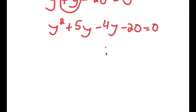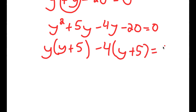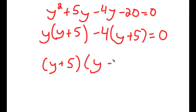I can rewrite y as 5y minus 4y, and the reason I did this is so I can factor by grouping. For y squared plus 5y, I'm going to factor out y, giving me y times y plus 5. And from negative 4y minus 20, I'm going to factor out negative 4, giving me negative 4 times y plus 5. Now from the entire equation, I'm going to factor out y plus 5, so I have y plus 5 times y minus 4 is equal to 0.